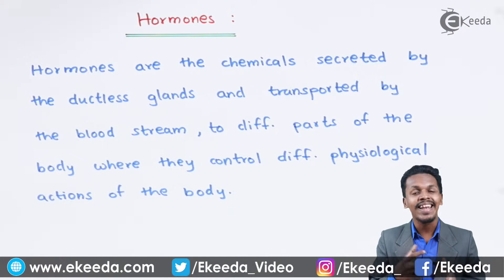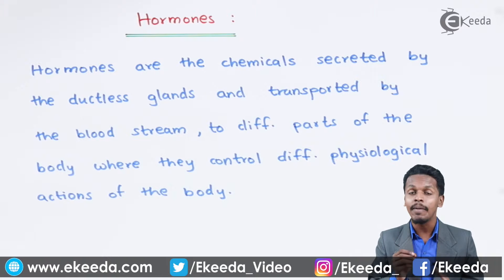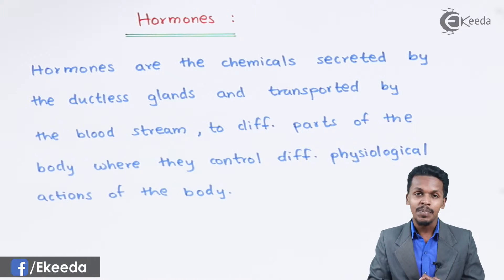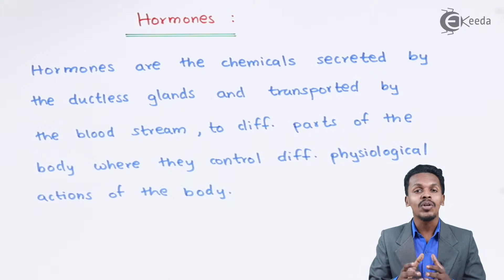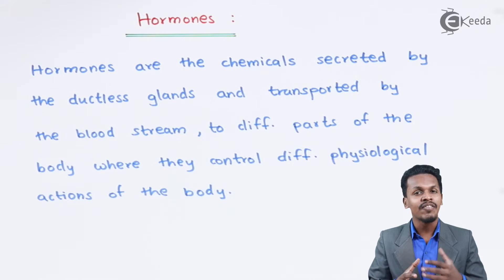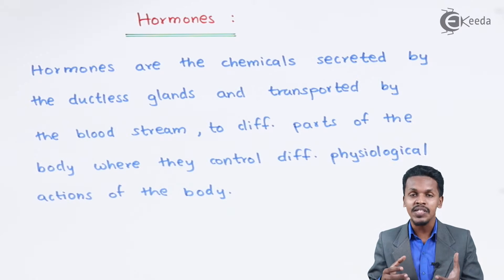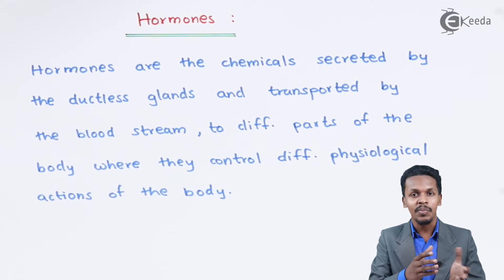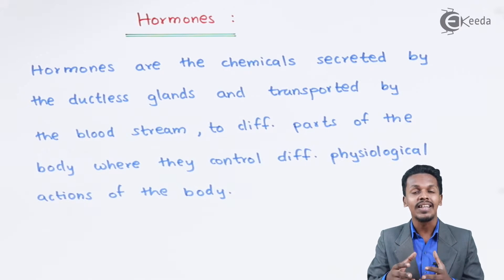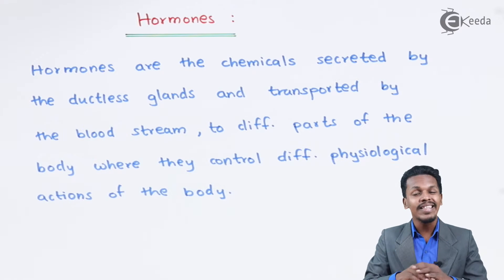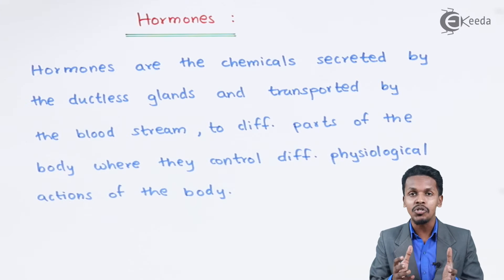Hormones are basically present in our body in small quantities, but they play a very vital role. For example, thyroxine, insulin, estrogen, progesterone — which are present in women — and testosterone in males. All of these have basic functions that are very important.